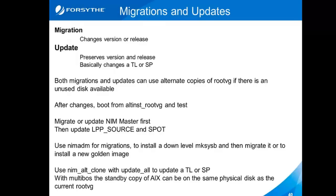Let's say I have an LPAR that's running at a particular version and technology level. I want to move it to the new Power 7 models that don't support that level. I can actually do a migration install and tell it to upgrade the version or release to the supported level by pointing it at the correct LPP and SPOT.